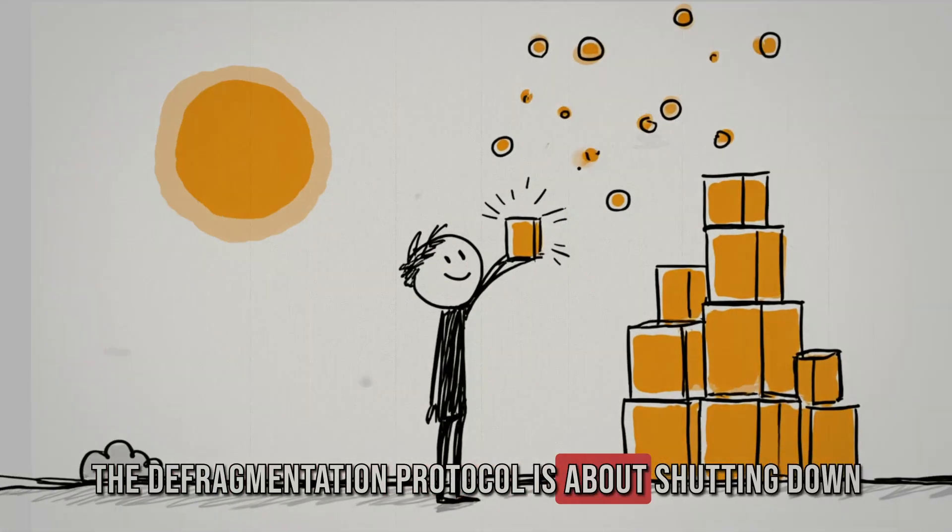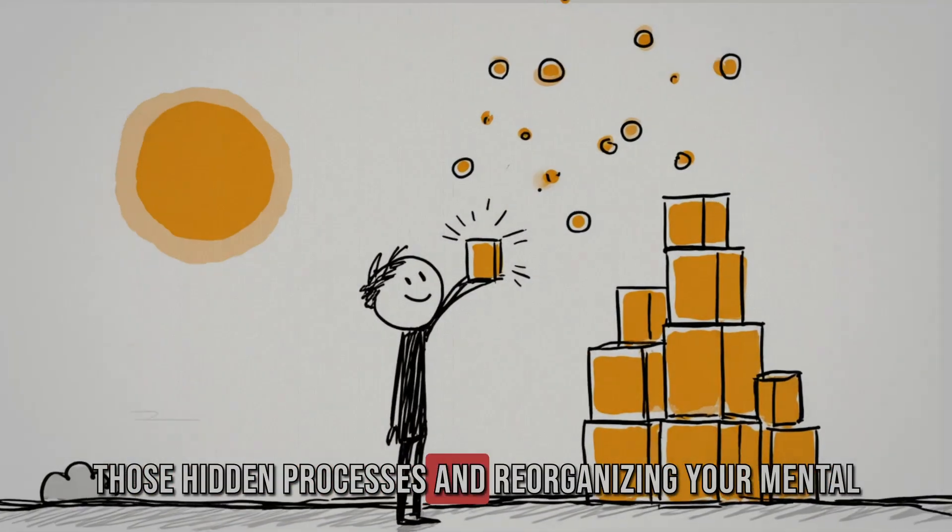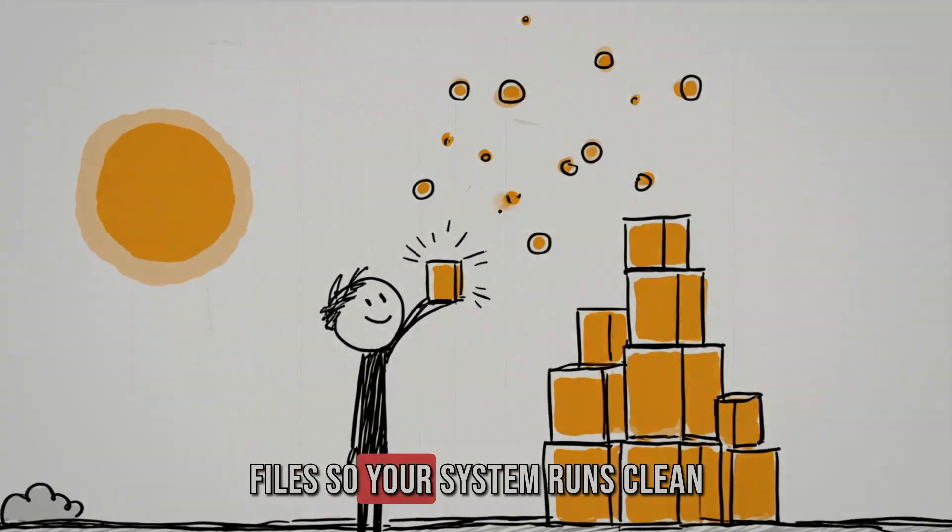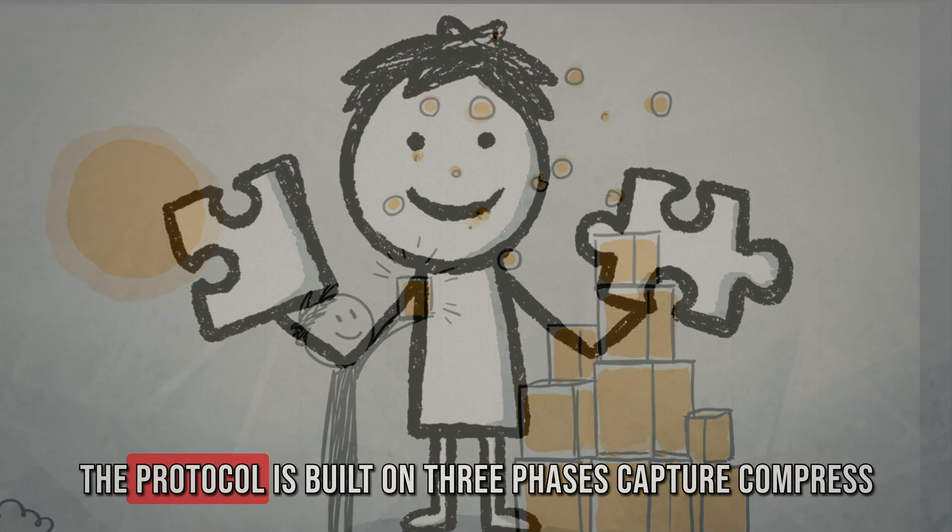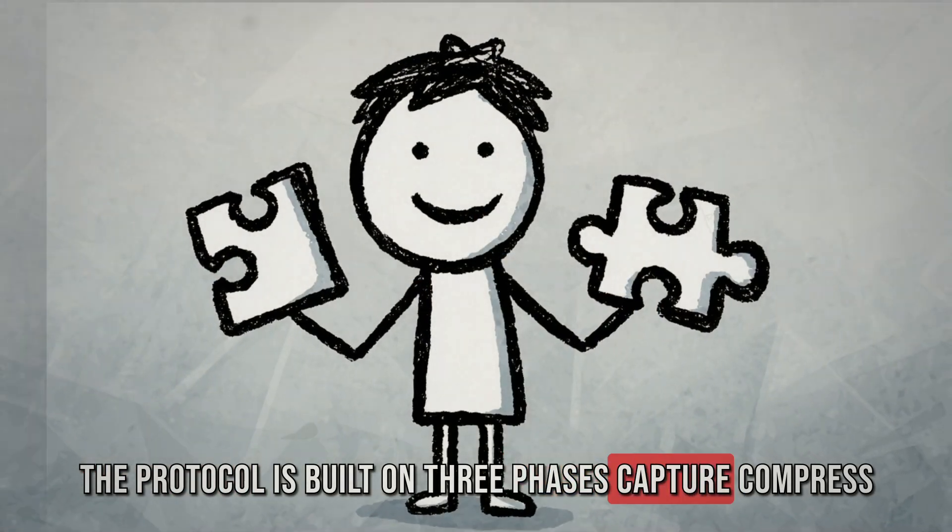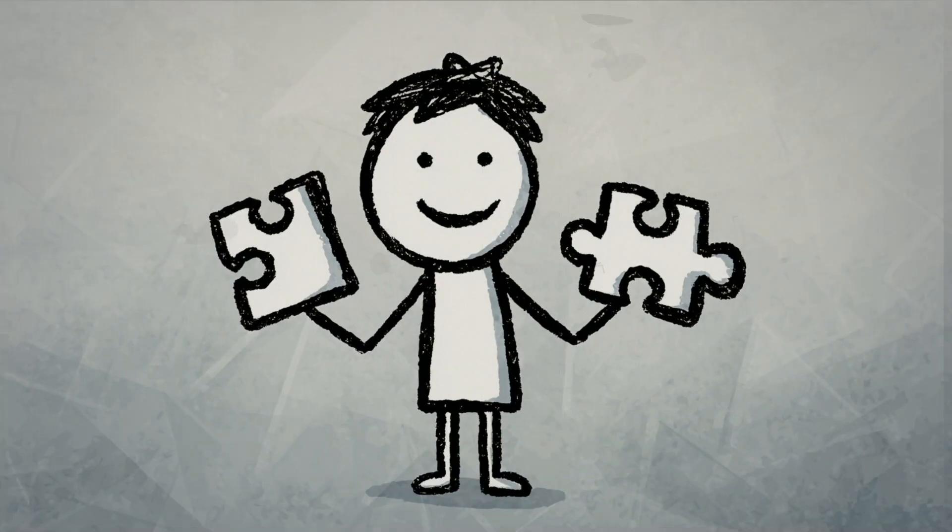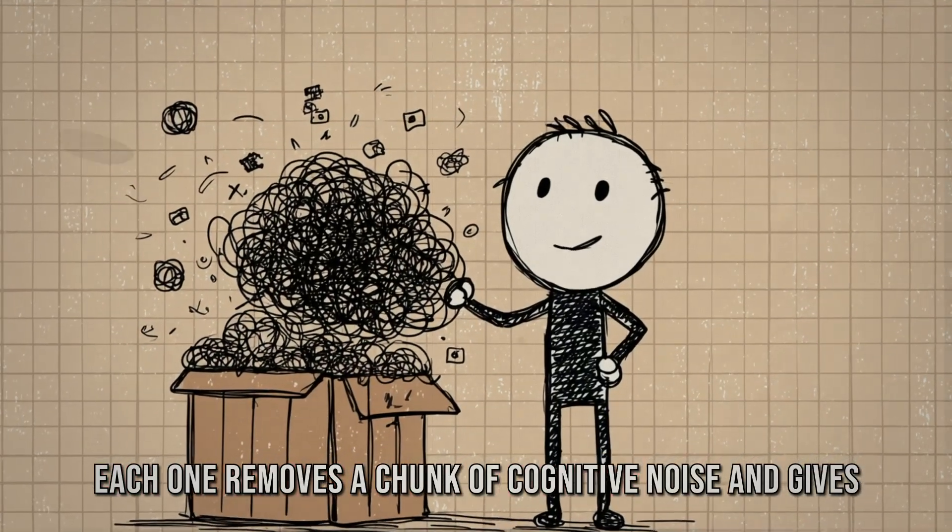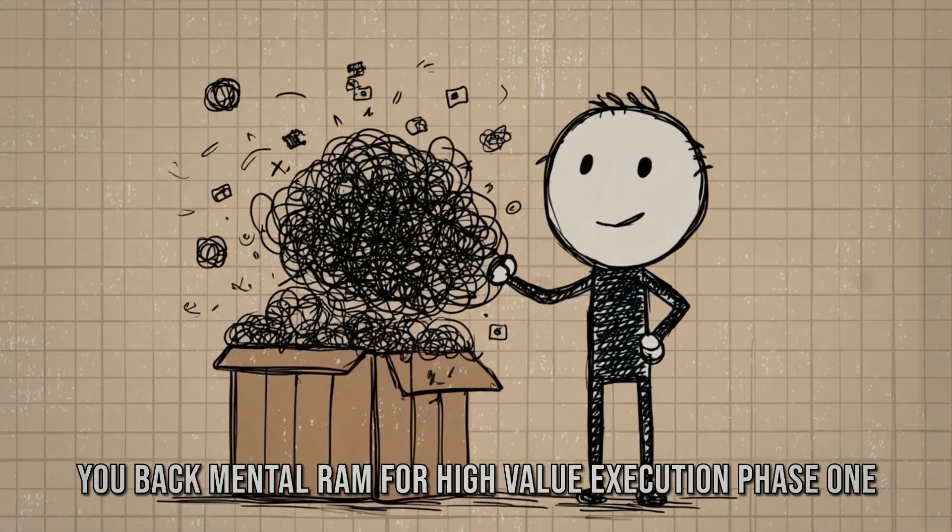The defragmentation protocol is about shutting down those hidden processes and reorganizing your mental files so your system runs clean. The protocol is built on three phases: capture, compress, and close. Each one removes a chunk of cognitive noise and gives you back mental RAM for high-value execution.